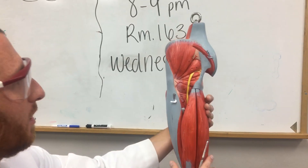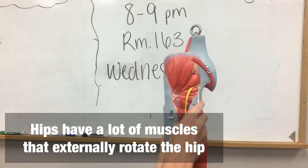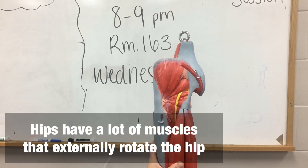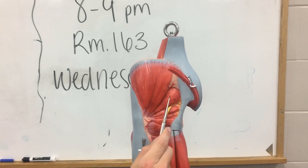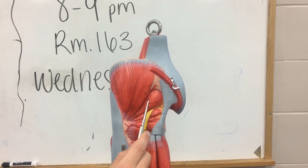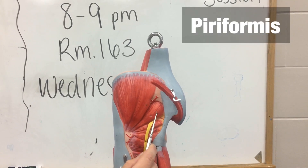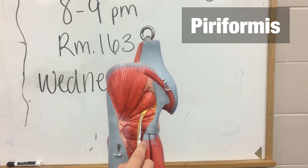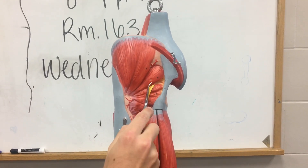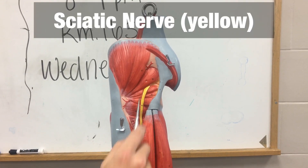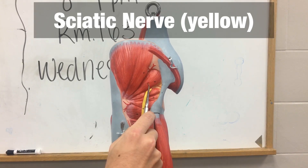Back here we can see a lot of small rotator muscles of the hip. We're going to focus on one called the piriformis. You can identify it because the sciatic nerve runs inferior to the piriformis muscle.